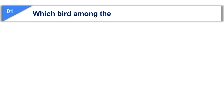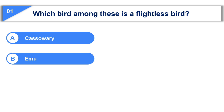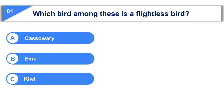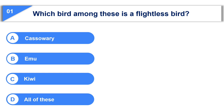which bird among these is a flightless bird? Option A, cassowary. Option B, emu. Option C, kiwi. Option D, all of these.